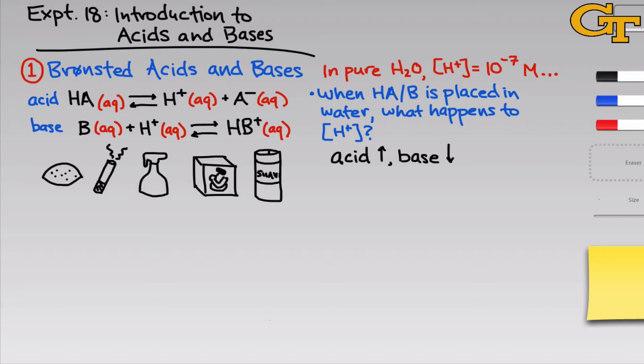In the first part of the experiment, we'll investigate several household products with a variety of different pH values. The acids and bases that are present in these products cause their pHs to deviate from that of pure water.